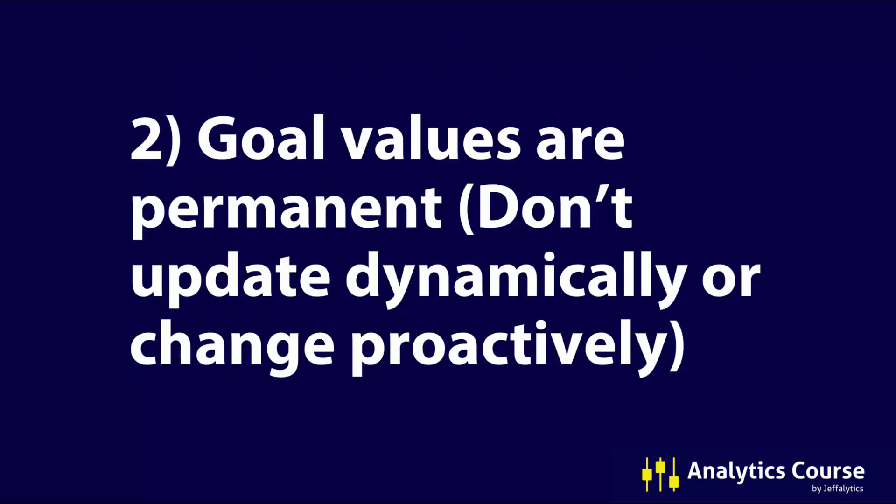Number two: goal values are permanent and they don't update dynamically or change proactively. So if you put in a goal value of $10 million, that's permanent — once somebody reaches that goal, it gets stuck in Google Analytics and you can never get that out. So if you put in a really bad or arbitrary value, it's stuck. You've permanently modified the data of your account, and if you did the wrong values, you've put junk in your system that you're never going to be able to get out, and you're going to have to explain it.